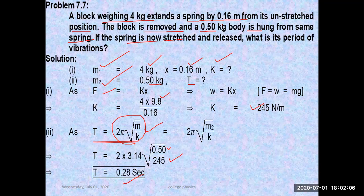Again, a block of 4 kg extends a spring by 0.16 meters from its unstretched position, that is from mean position. The block is removed and a 0.50 kg body is hung from the same spring. Putting this means K, the value of K, will be the same. So by using the first data we can calculate the value of K because the material did not change.